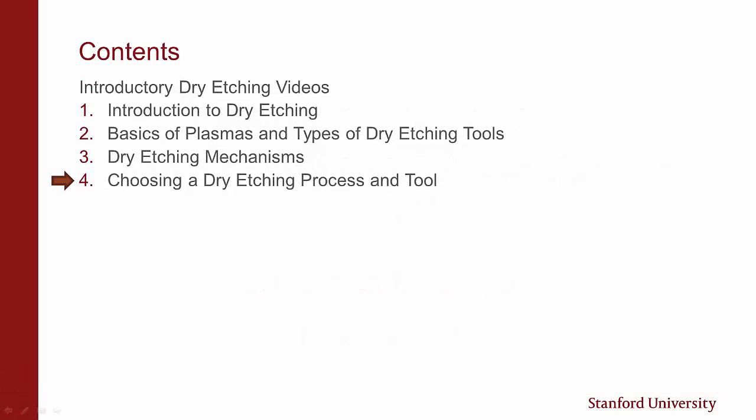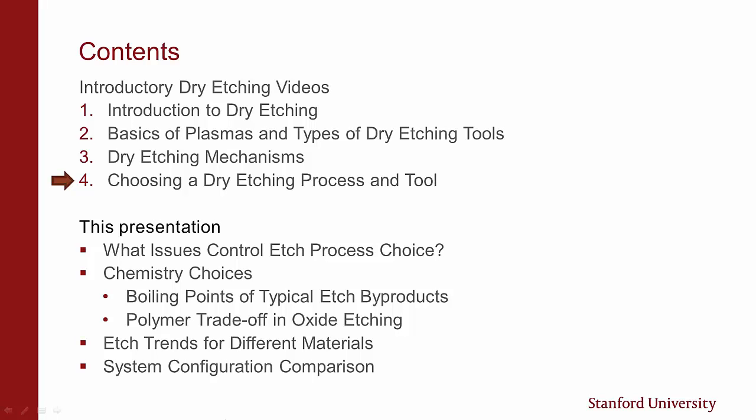Previously, I gave an introduction to dry etching, followed by basic plasma concepts and types of dry etching tools, followed by dry etching mechanisms. In this lecture, I'm going to cover what are the issues that control etch process choice, etch chemistry choices, and I'll talk about the role of boiling points to help determine useful products, and polymer tradeoffs and oxide etching. I'll then cover etch trends in different materials and end with a comparison between different etch tool configurations.